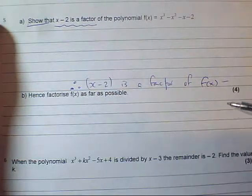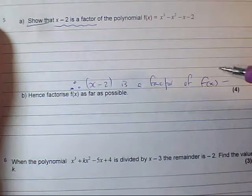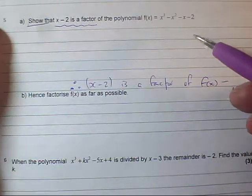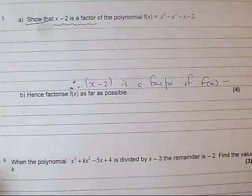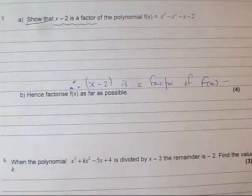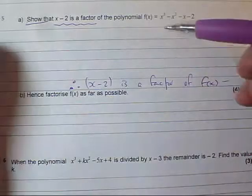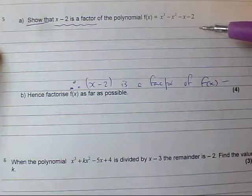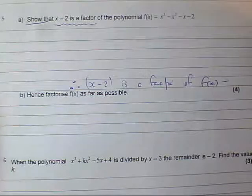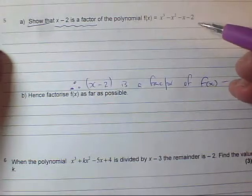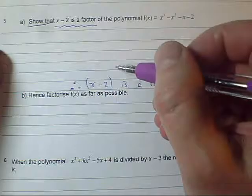In a show that question, you're going to finish by writing whatever happens. How do I show that it's a factor? Well, what you don't want to do is the grid method. Sometimes it will actually say use the factor theorem, in which case you'll get zero marks for the grid method. You're mad to use the grid method when you could use the factor theorem.